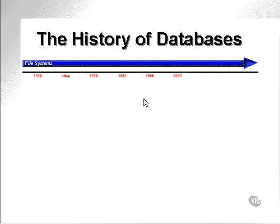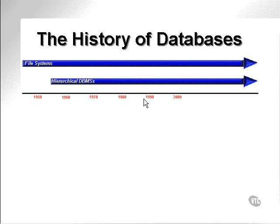A file system implies a flat file, text file, binary file, something like that. Around about the mid-50s, somebody came up with an idea for a hierarchical database. A hierarchical database is a tree structure — you would have branch nodes and leaf nodes, where the branch nodes would determine where something is stored based on the value of that branch. Just imagine a tree upside down. That's what a hierarchical database is.